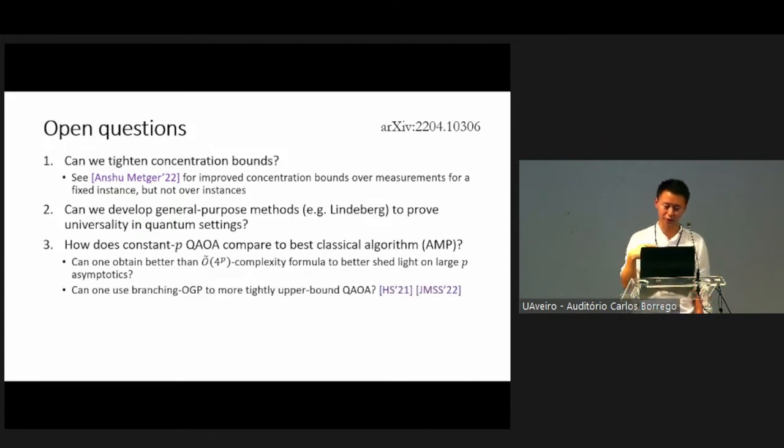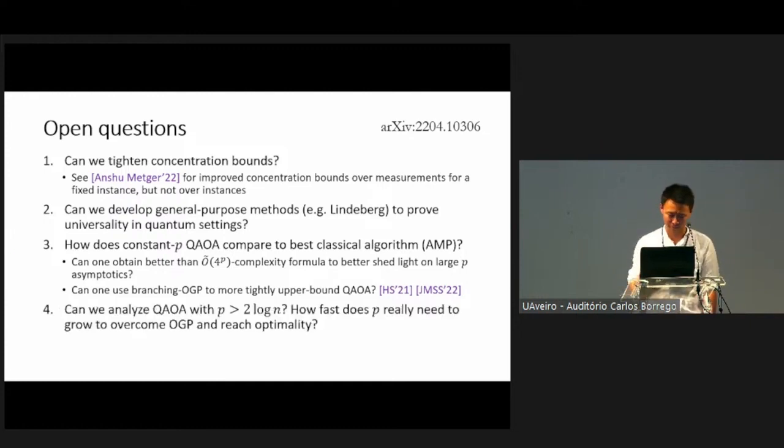Furthermore, can we somehow use this dense from sparse reduction to apply to more sophisticated versions of overlap gap property to more tightly upper bound the performance of this QAOA? Finally, all of the results that we've mentioned so far, including the one in the earlier talk, only applies when p is sufficiently small. For example, if p is greater than two times log n, none of the results that we've discussed apply. We know that when p is allowed to grow exponentially with n, you're able to get to the optimum for these problems. But the question still remains, how fast does p actually need to grow? Is exponential really necessary? If we can somehow show that a polynomial growth is sufficient to achieve near optimality for this spin glass problem, then we will have a really convincing case for quantum advantage. That's all. I'll take more questions. Thank you.